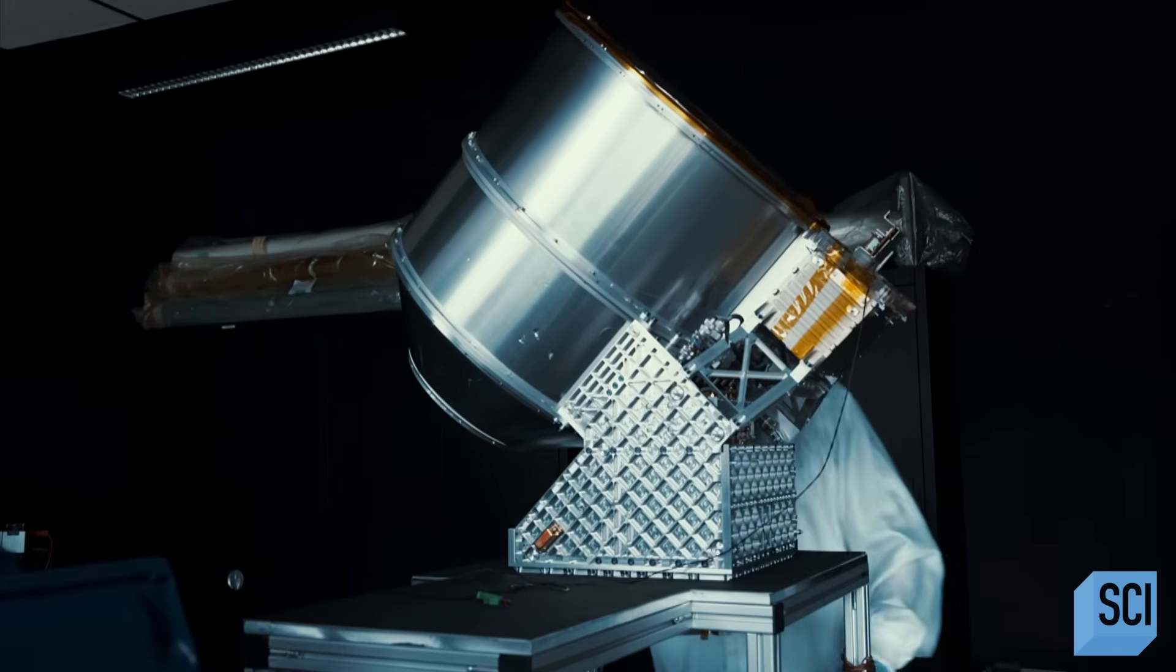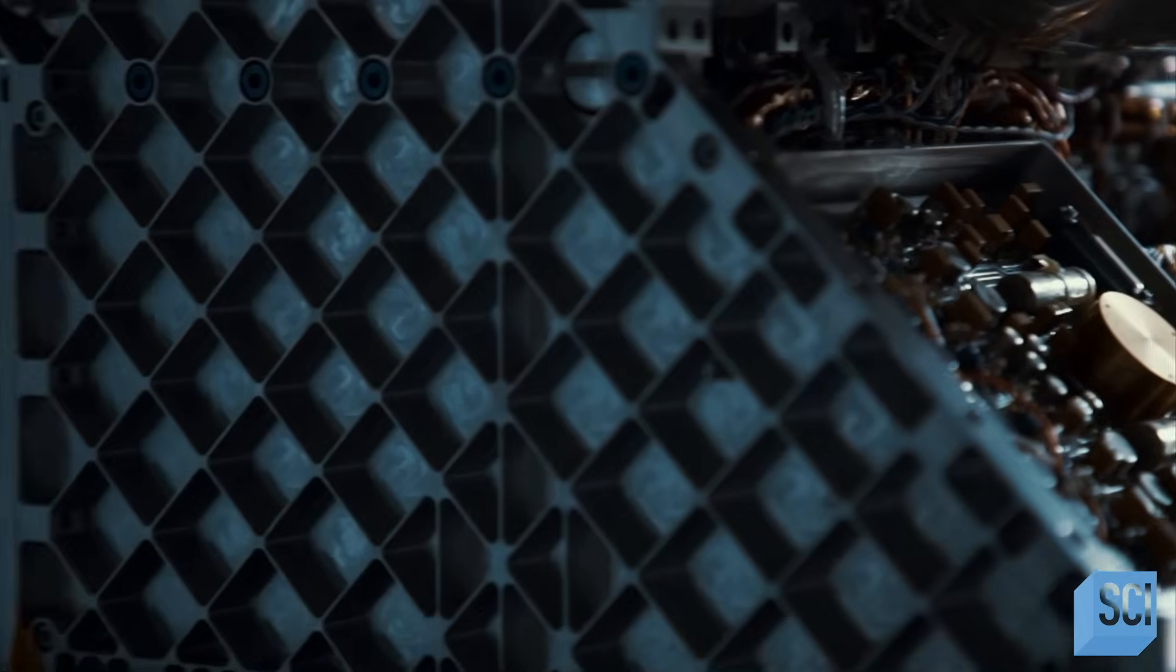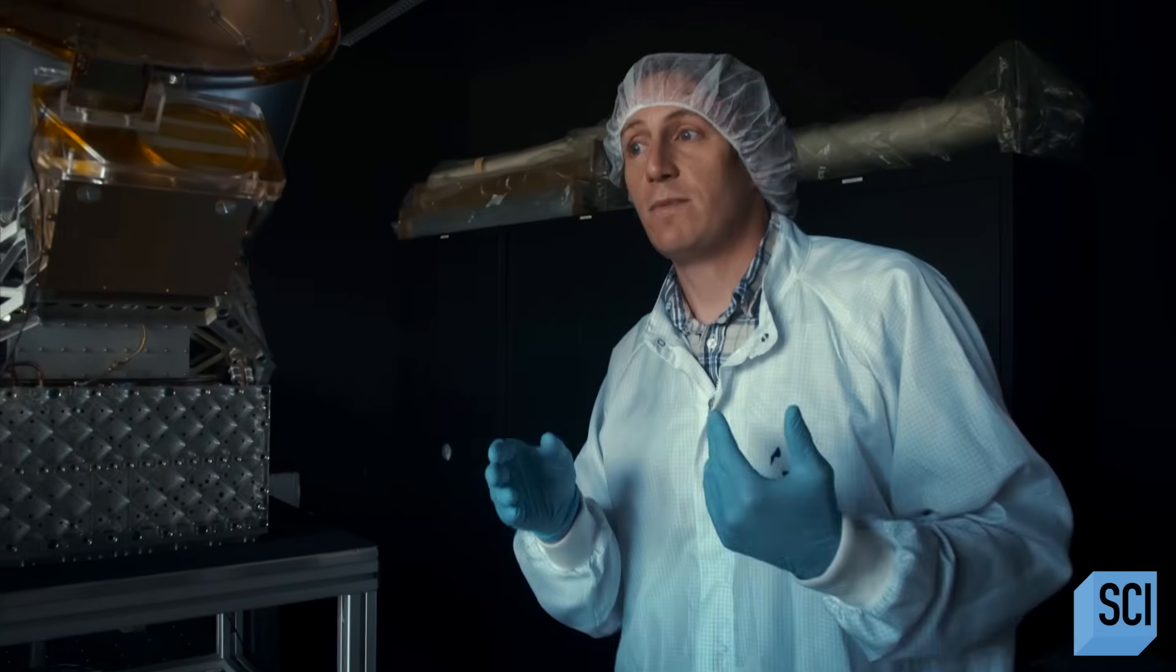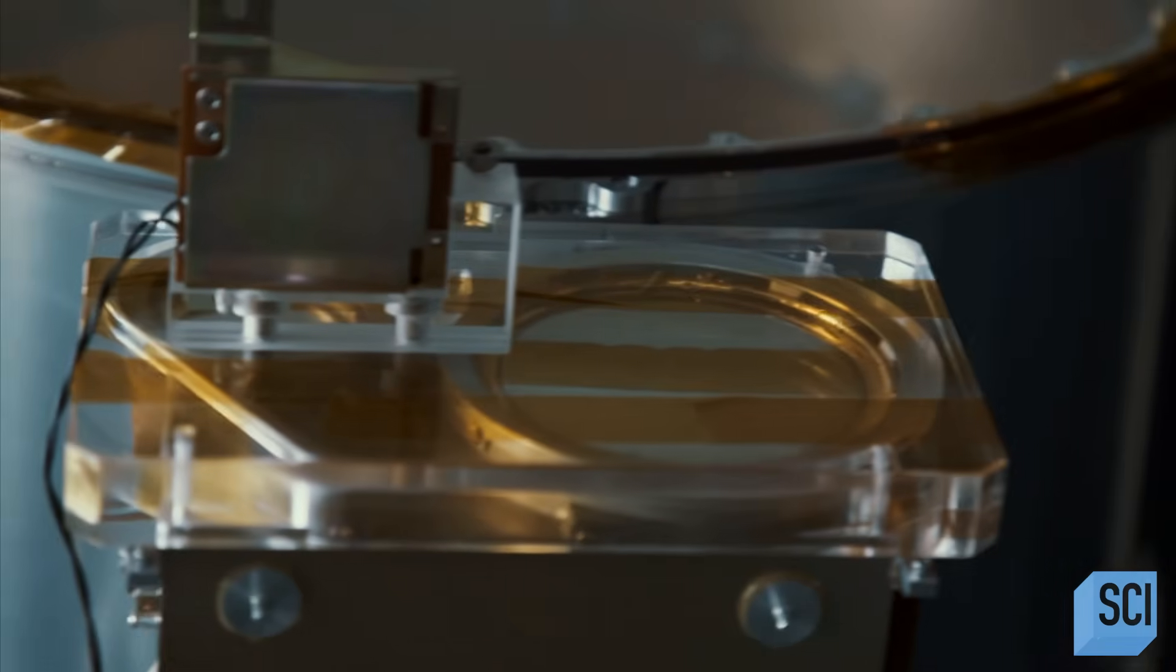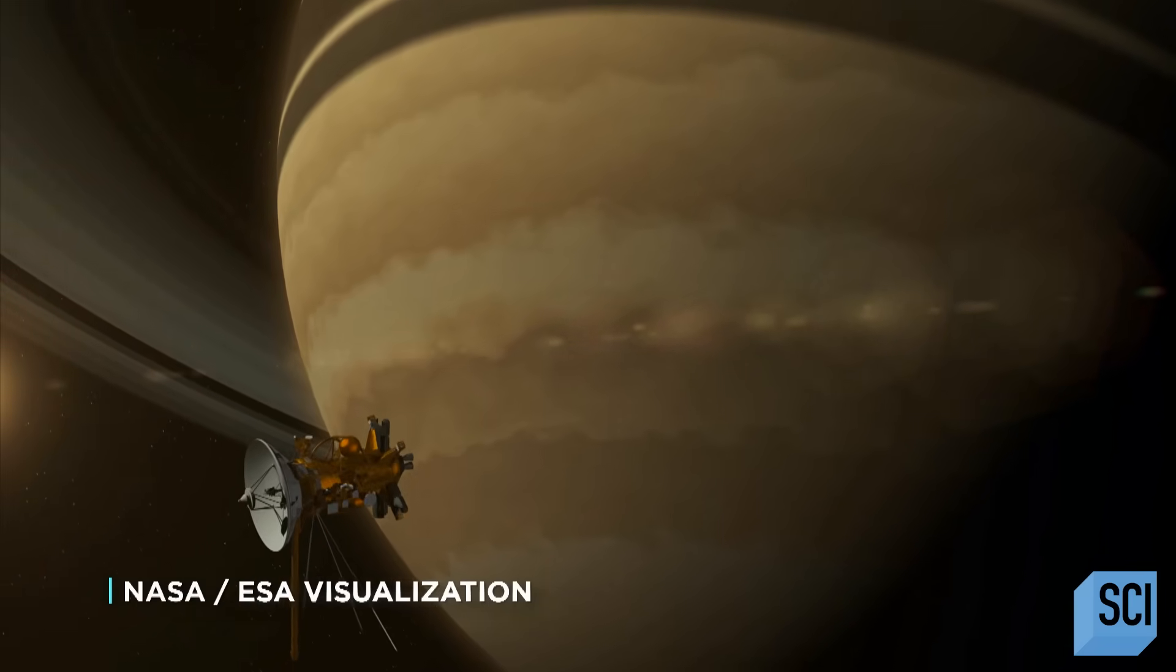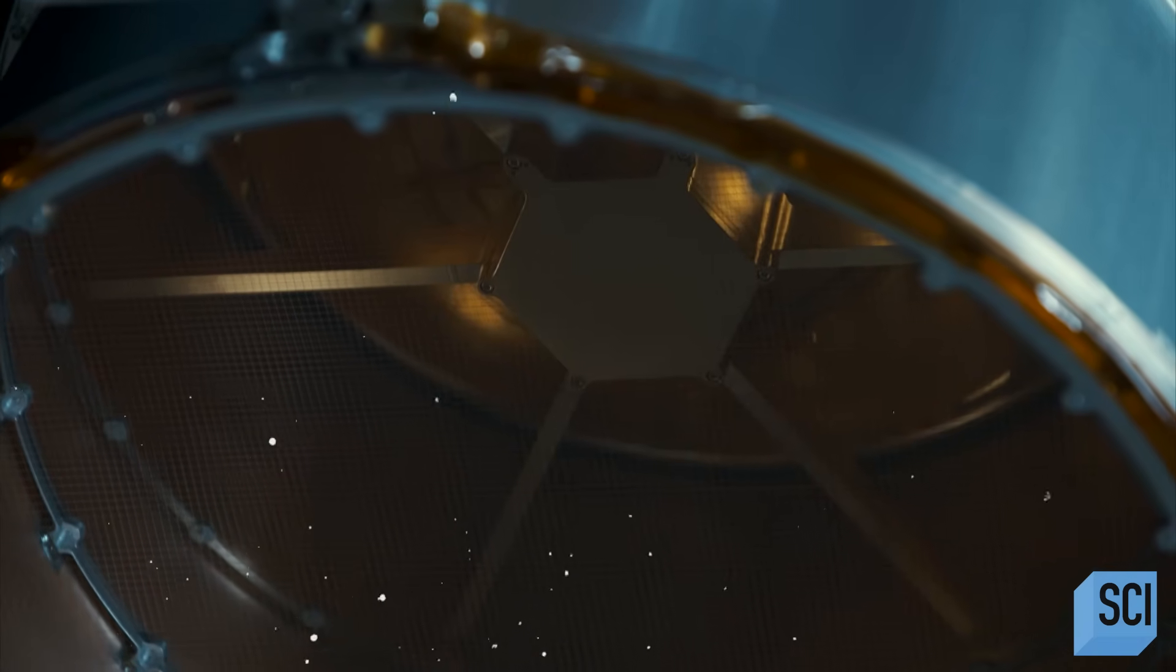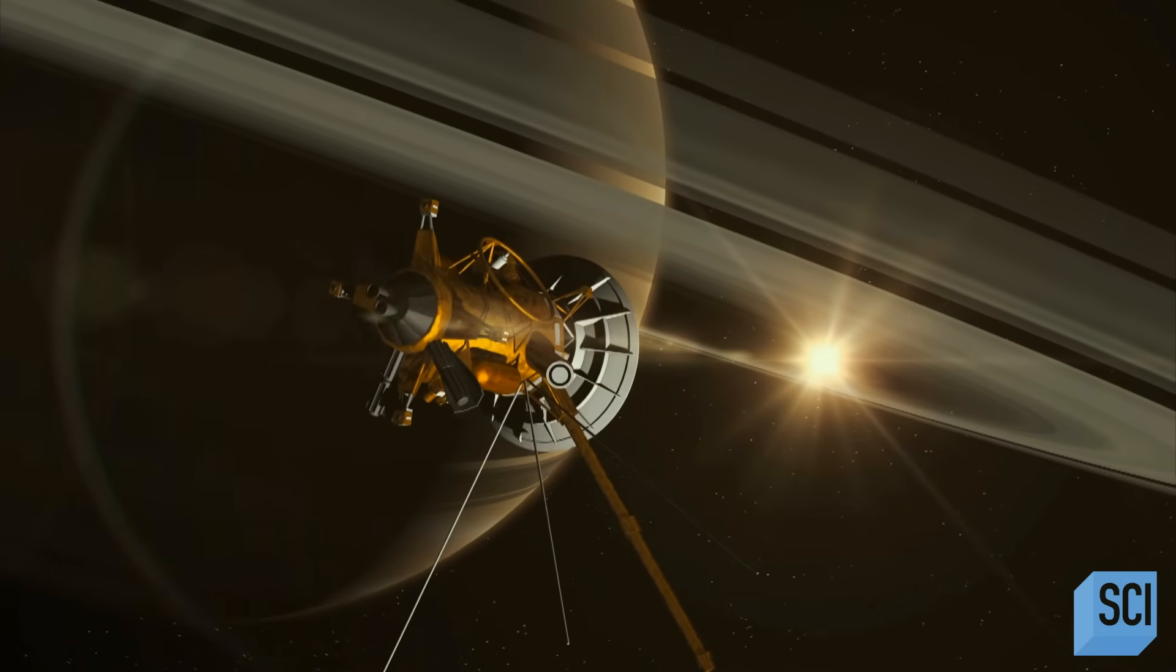This instrument is made to detect dust particles, small grains of matter, which are as tiny as a human hair, up to maybe a few times the size of a grain of sand. Cassini's cosmic dust analyzer measures the dust streaming into the Saturnian system over 13 years. Nicholas analyzes the results, and what he finds is staggering.